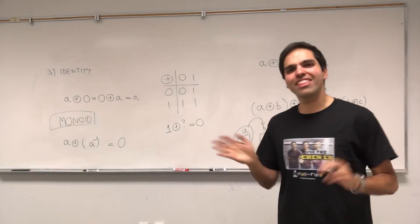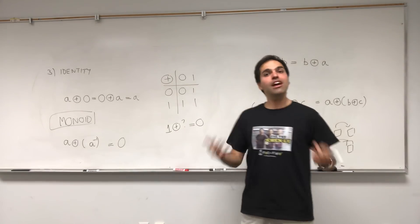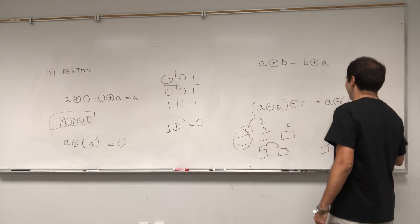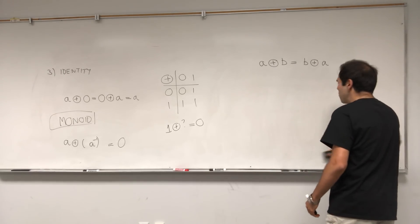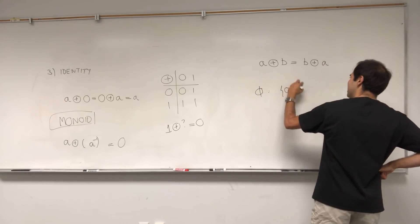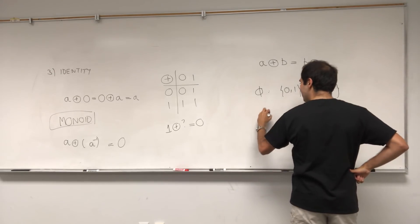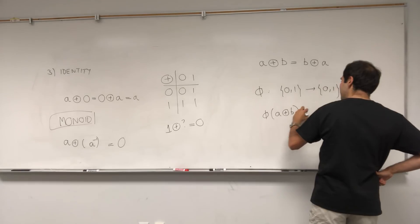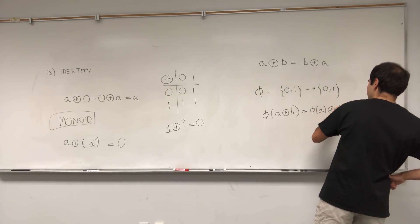One more thing I want to talk about: once you have this structure of lasagnas, you could have functions of lasagnas, and that leads to what's called a homomorphism. A homomorphism phi from lasagnas to lasagnas is any function with this property: phi of A lasagna-plus B equals phi of A lasagna-plus phi of B.